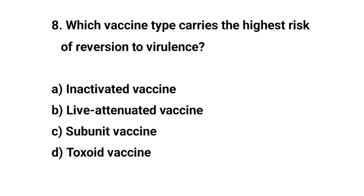Question number 8. Which vaccine type carries the highest risk of reversion to virulence? The right answer is B: Live attenuated vaccine.